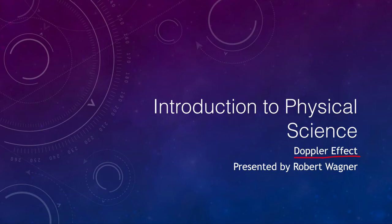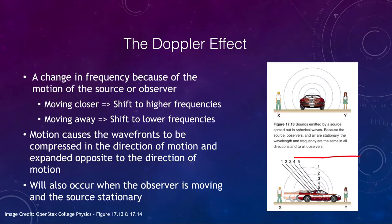What is the Doppler effect? The Doppler effect is defined to be the change in frequency that occurs because of motion. And that motion can be either the source or the observer. We'll look at both options here.